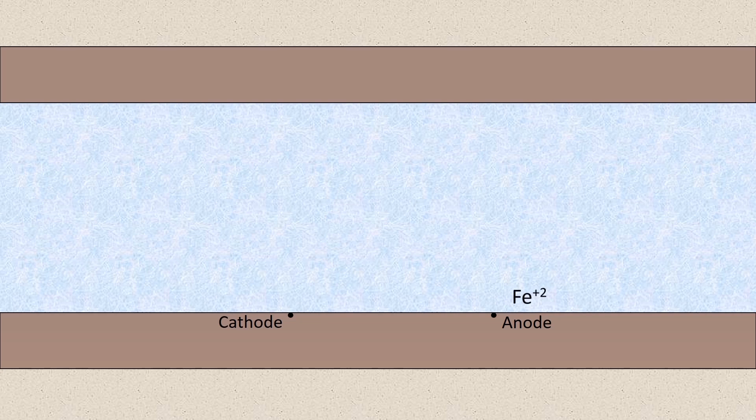Now at the anode, iron atoms are breaking away and entering the water so they go into solution. And when this happens, the iron atoms ionize and give off two electrons. The electrons flow from the anode to the cathode. So this occurs over and over again. The iron goes into solution and two electrons flow from the anode to the cathode.